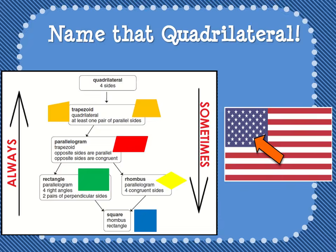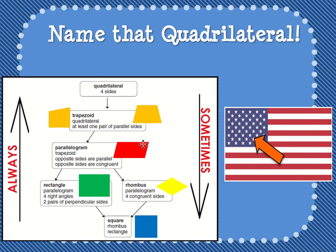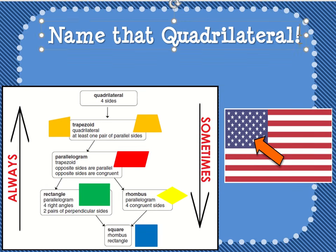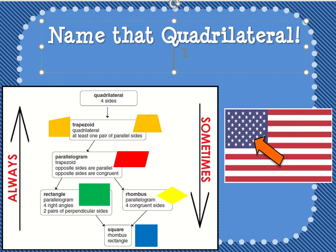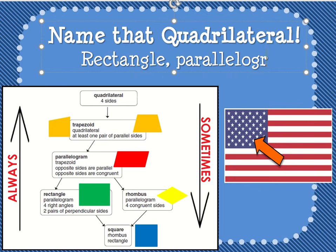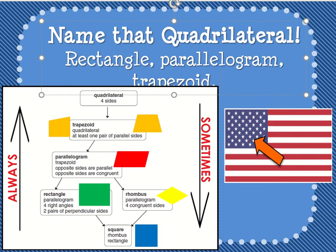We're going to look at the blue part of the flag here — name that quadrilateral. Hopefully you said that's a rectangle. It is a rectangle, and it's not just a rectangle. It is a parallelogram, it is a trapezoid, and it is a quadrilateral, because it's everything above it.